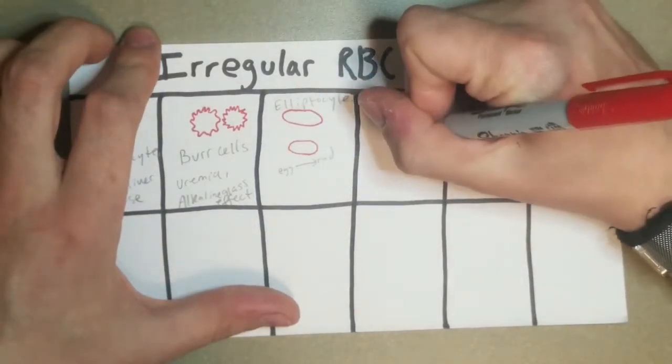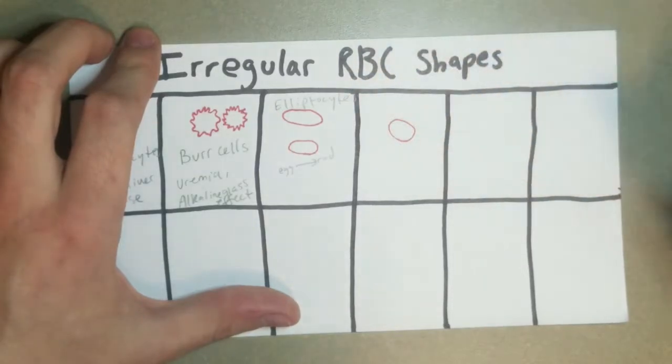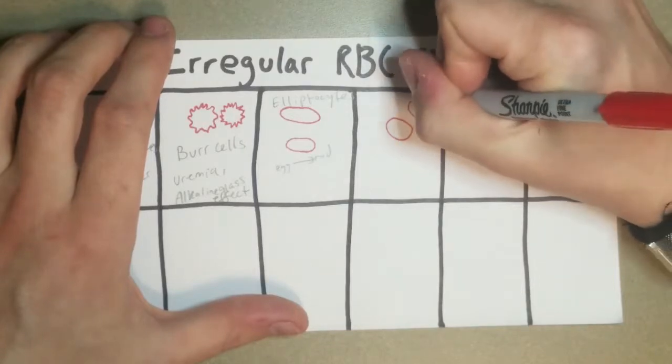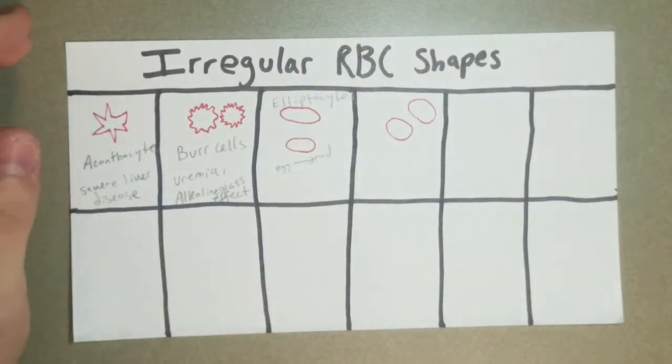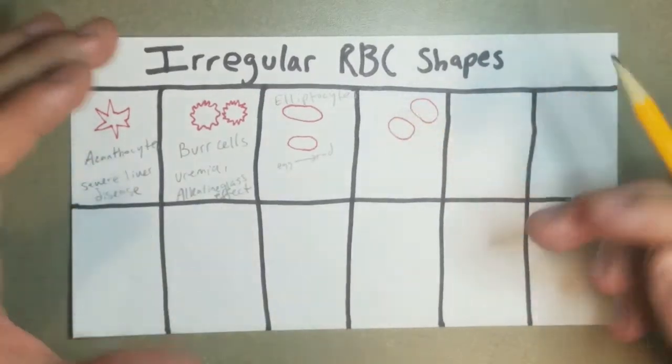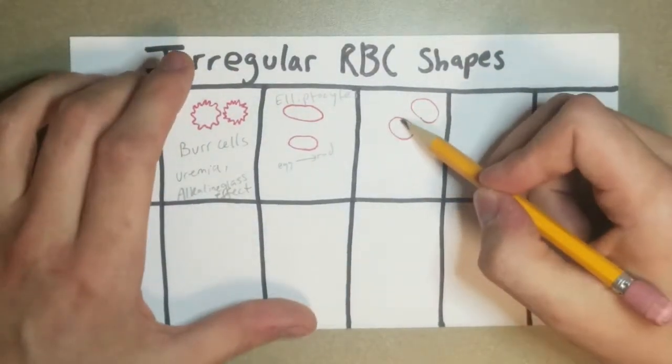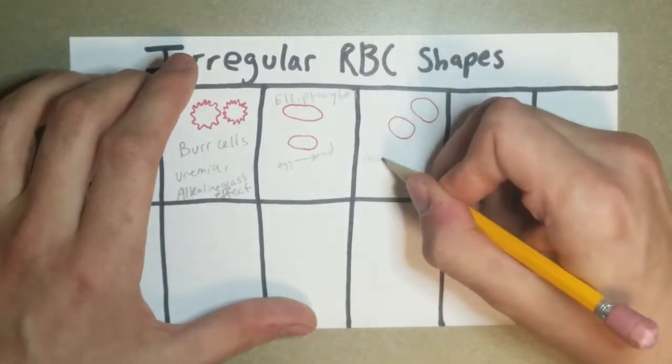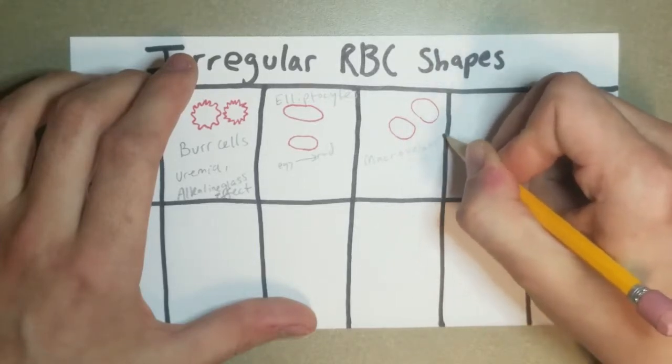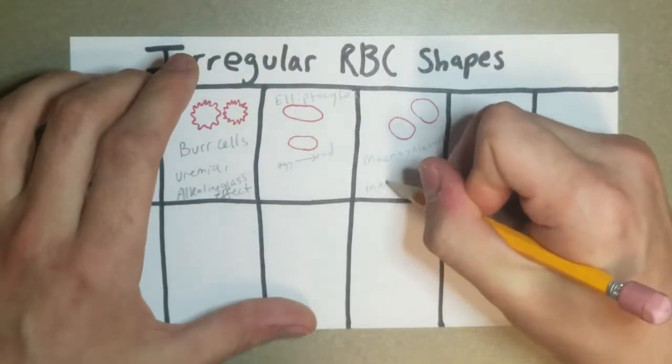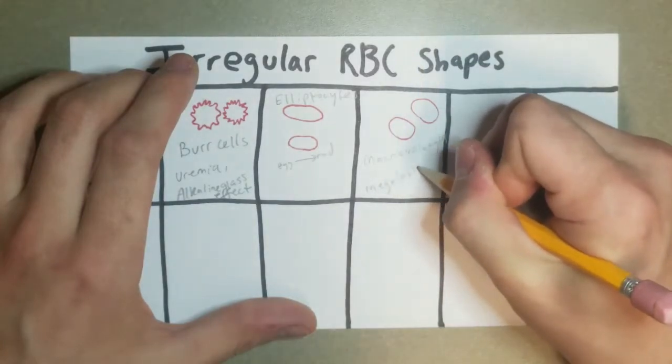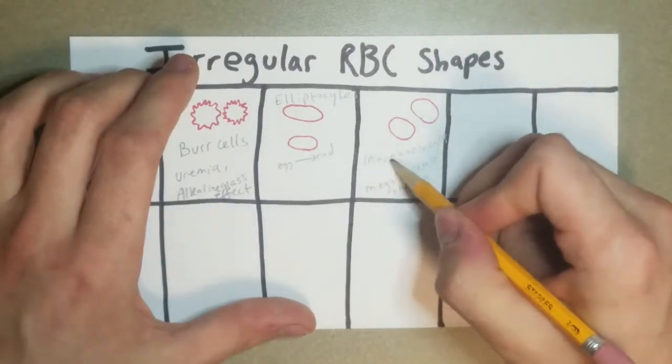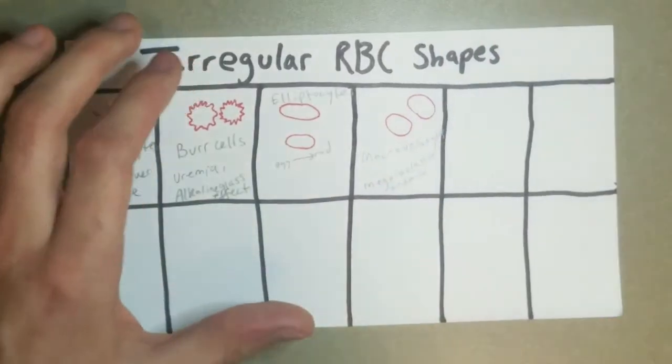Next, we have a very similar kind, an ovalocyte, or it's a macro-ovalocyte is how it's called. And these are similar, but they're a little less perfect. Their pattern is basically they're an oval, but they're not an ellipsis. So, these sides are not going to necessarily be parallel. And these are seen in megaloblastic anemia. I like to just think of it macro-mega. That sometimes helps me.